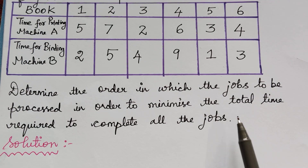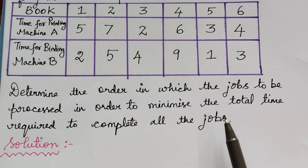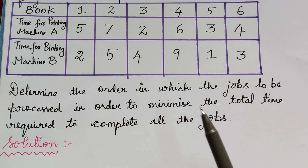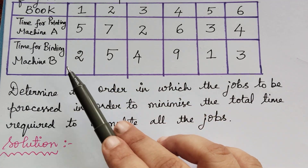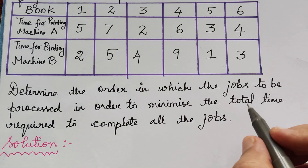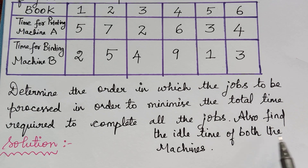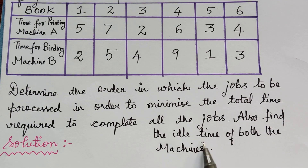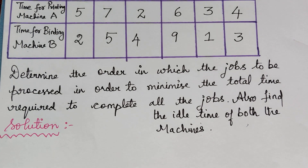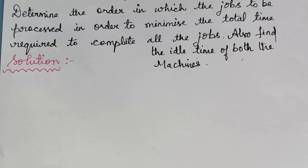Though it is not asked in the question, it is always good to find the idle time — that is the time machine A and machine B remain idle. So I will just add that question also and find the ideal time of both the machines. The first step is to find the job sequence.